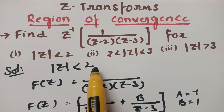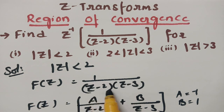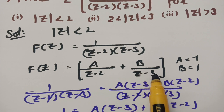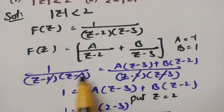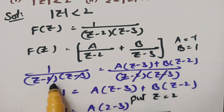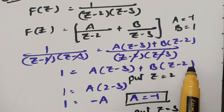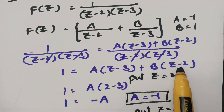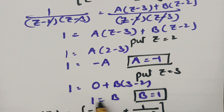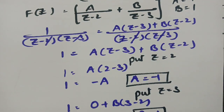In the first case, I am taking mod Z less than 2. Let F(Z) = 1/[(Z-2)(Z-3)]. Resolving into partial fractions: F(Z) = A/(Z-2) + B/(Z-3). Taking LCM gives 1 = A(Z-3) + B(Z-2). Putting Z=2, we get A = -1. Putting Z=3, we get B = 1. So F(Z) = -1/(Z-2) + 1/(Z-3).